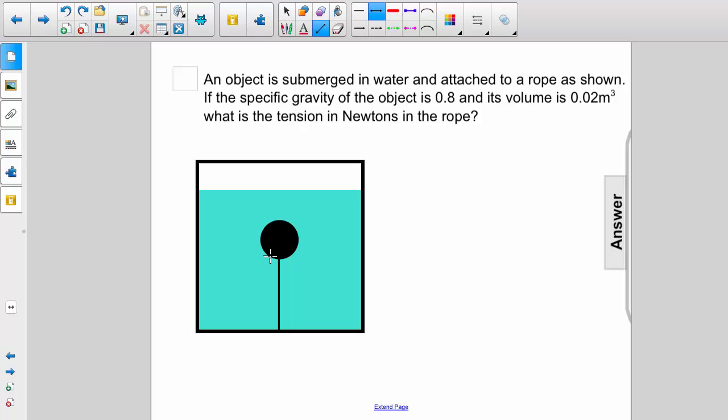As we look at the object, we can see that there are three forces acting on it. The first one is its weight. The second one, also pointing in the same direction as weight, is the tension in the rope that is holding the object down. Pushing the object up, we have a buoyant force. These three forces must balance.